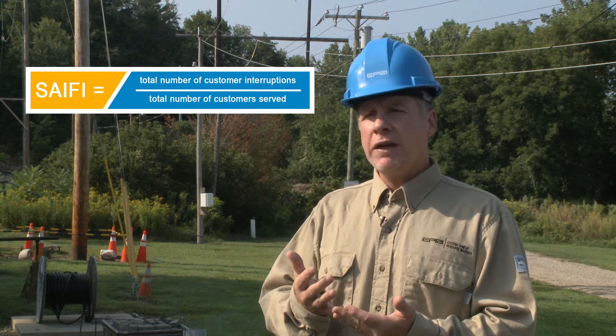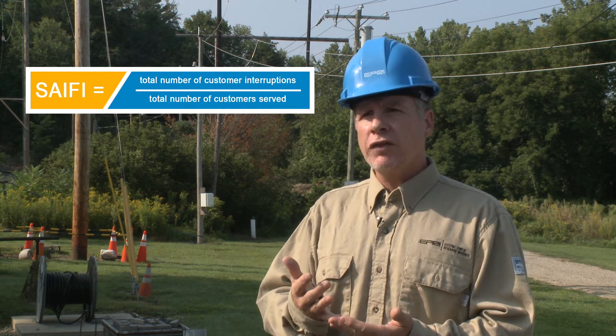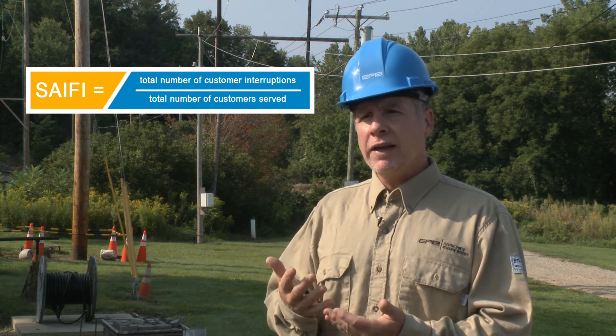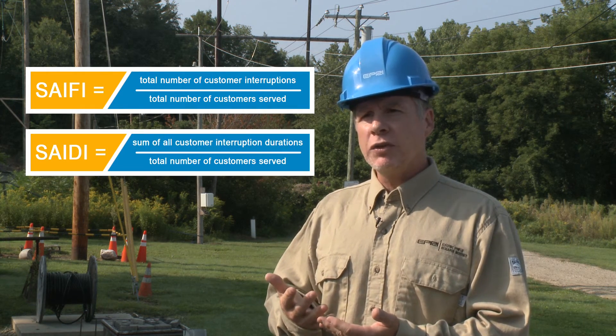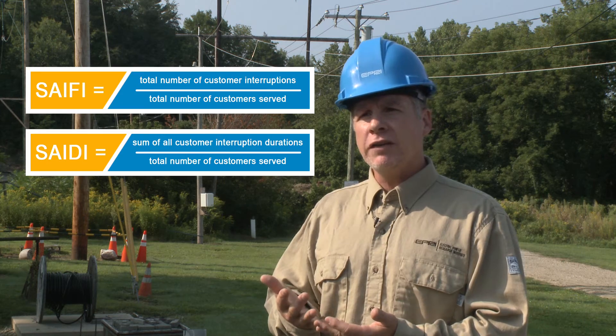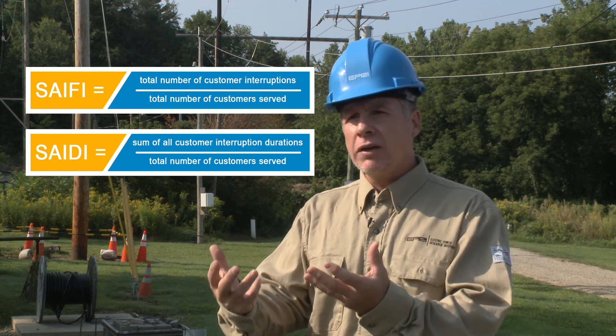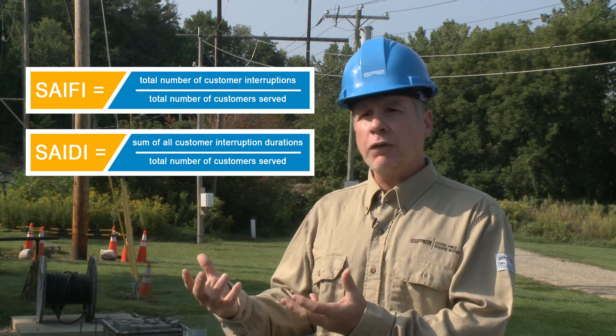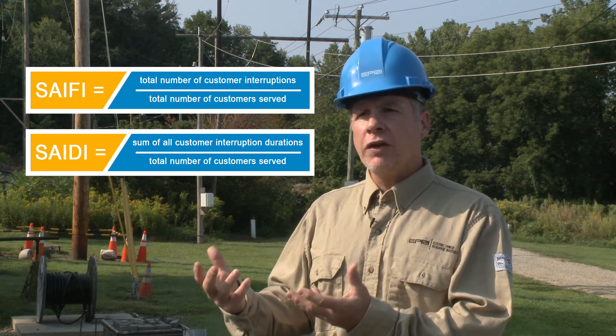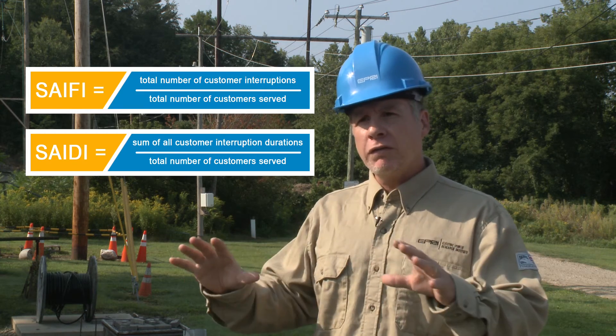We start out with a circuit without any distribution automation switches and look at the reliability indices called SAFI, which is a frequency index on reliability, and SADI, which is a duration index on reliability. We calculate the predicted SAFI and SADI for these feeders based on their configurations and their failure probabilities.